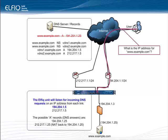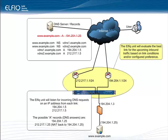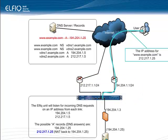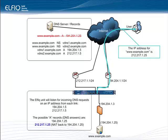The request is channeled through the Internet and reaches the Elfic unit on the primary link — though note it is random and DNS requests could have gone through the secondary link. The Elfic unit was listening for DNS requests on that IP address. The next step is that the Elfic unit evaluates the best link for the upcoming inbound traffic based on link conditions and configured preference. In this case, there was a preference to have that user come in through the secondary link. So the Elfic unit answers that the IP address for www.example.com is 212.217.1.25.